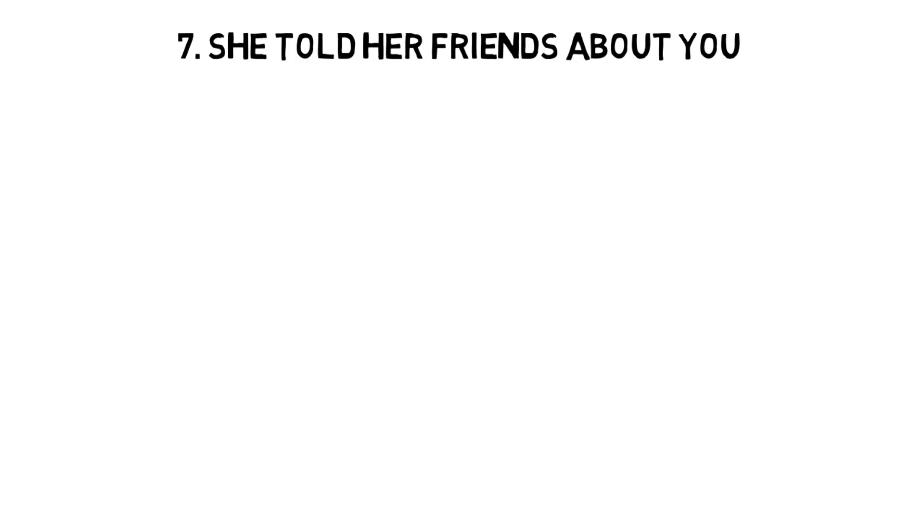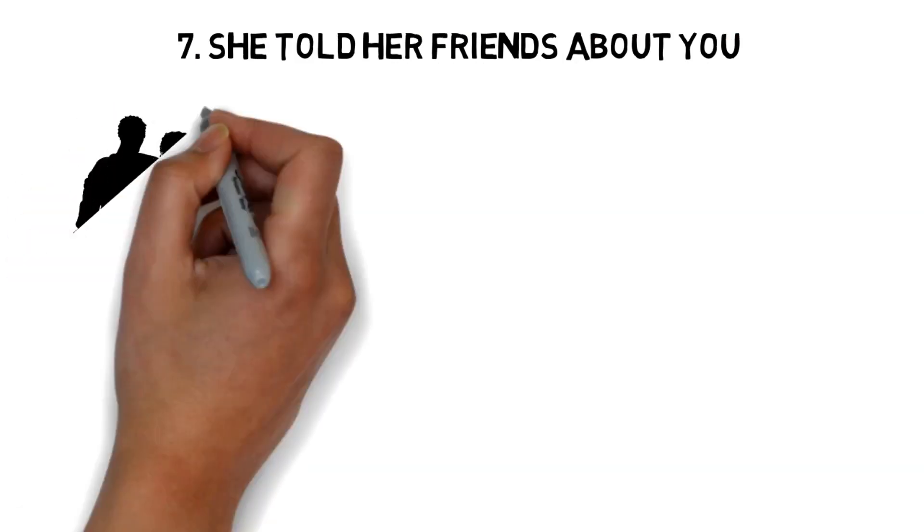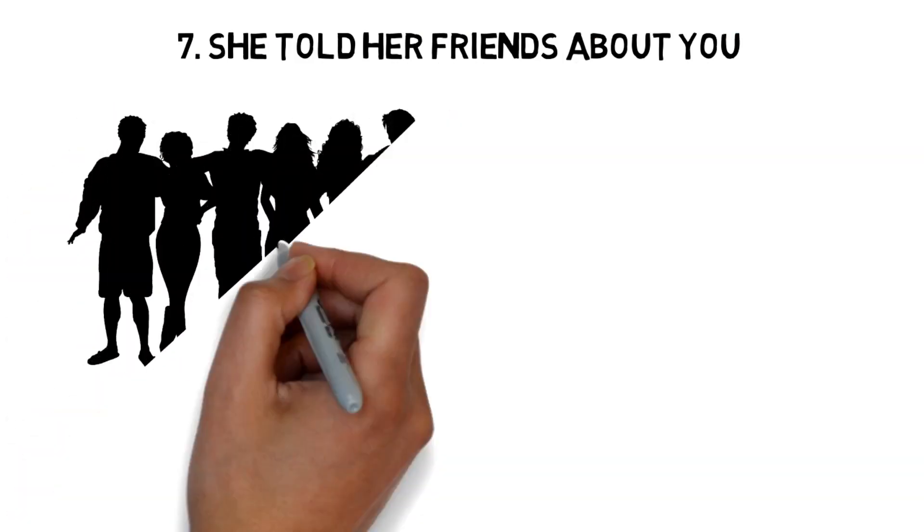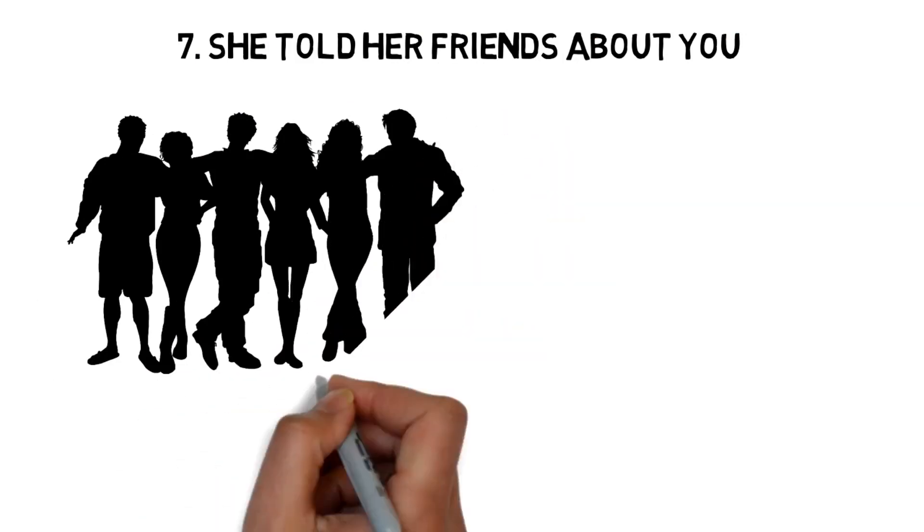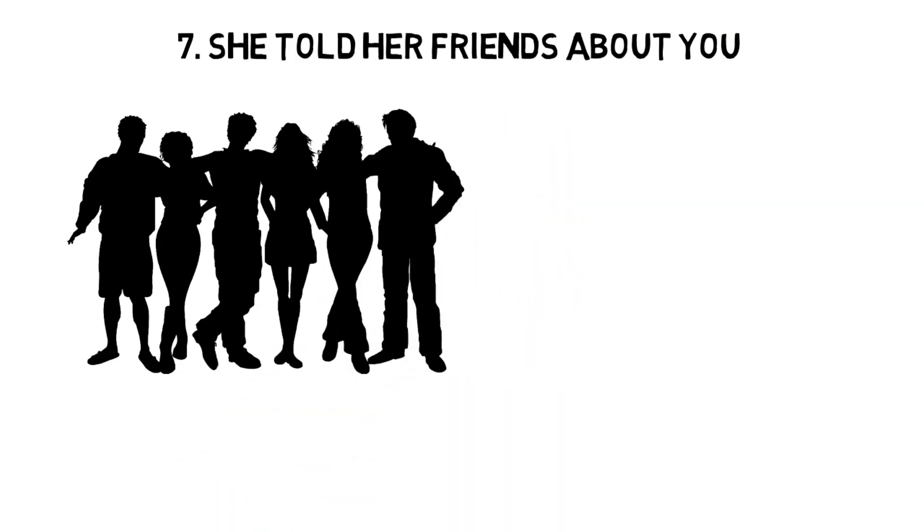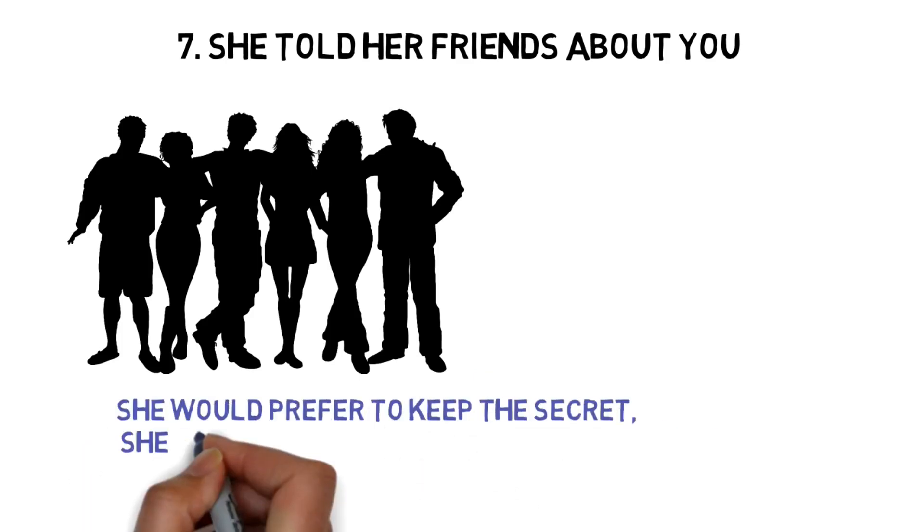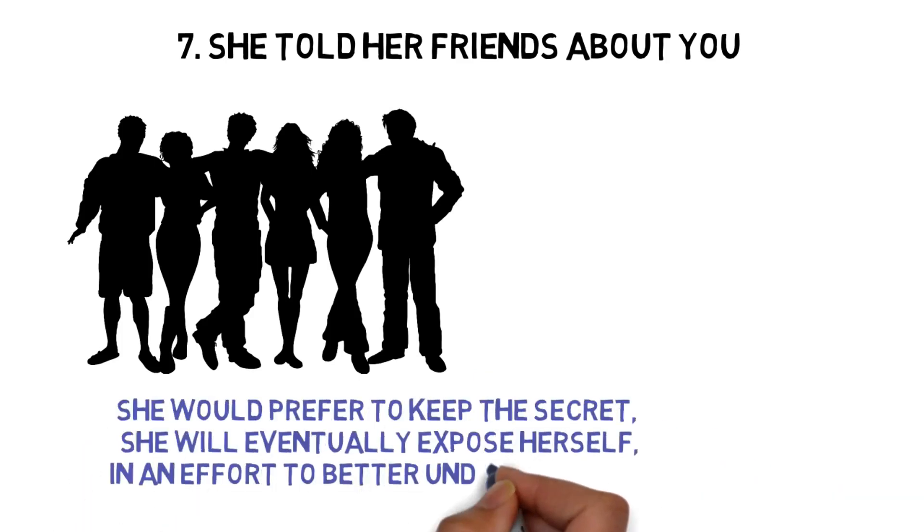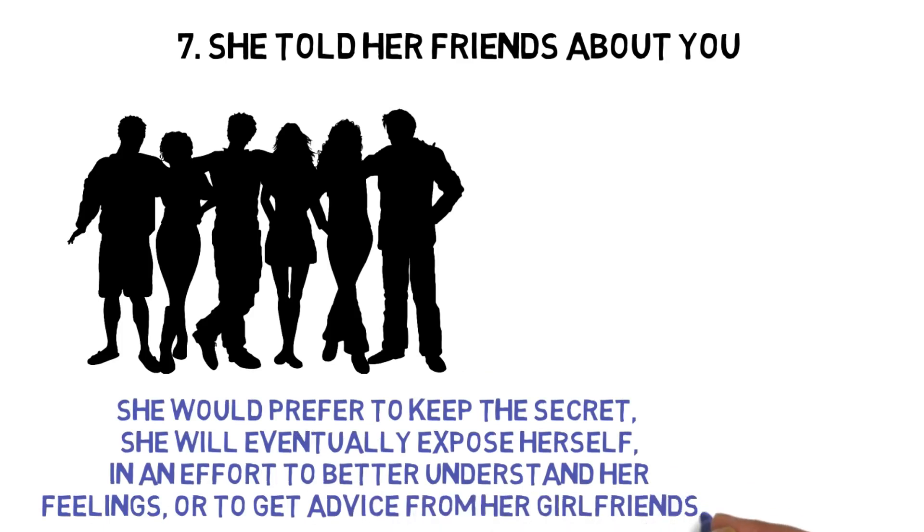7. She told her friends about you. When a woman falls in love, is attracted, or is under the charm of a man, she can't help but talk to her friends about it. And even if, out of shyness or fear of the reactions, she would prefer to keep the secret, she will eventually expose herself in an effort to better understand her feelings, or to get advice from her girlfriends.